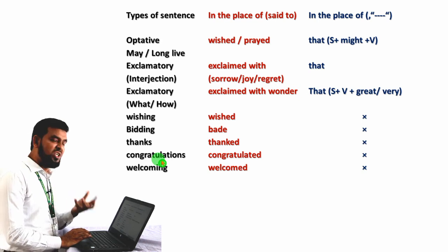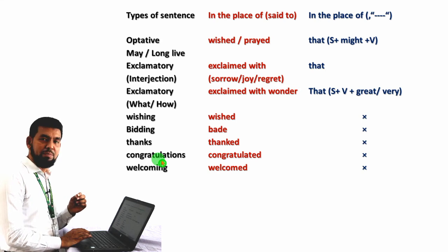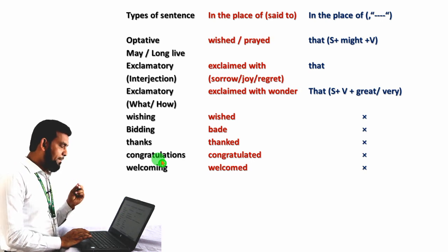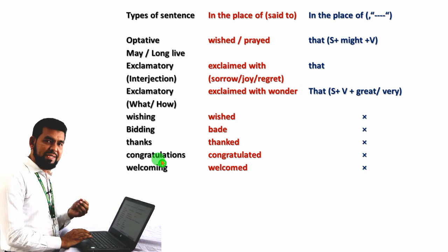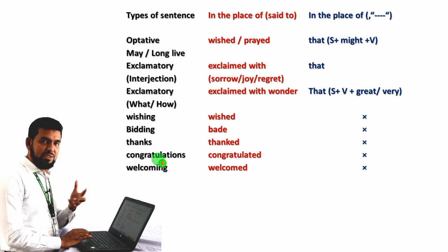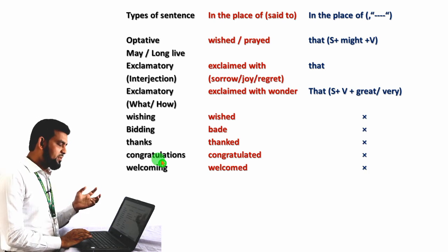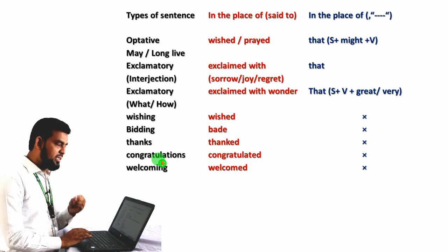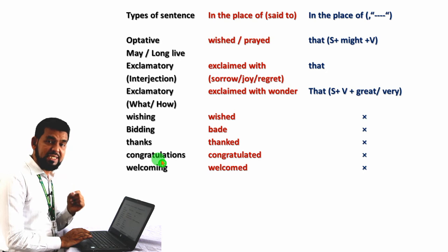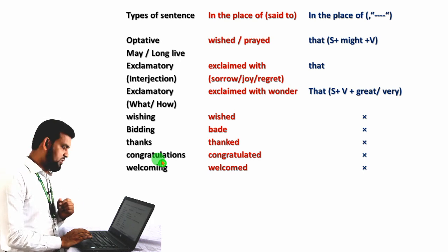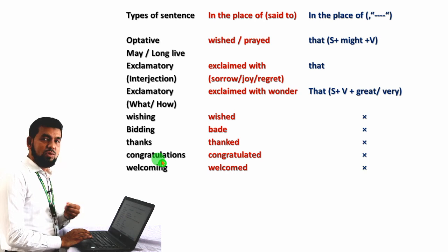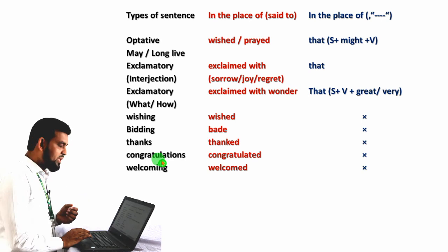If the sentence denotes wishing, we have to use 'wished' in place of 'said to', but in place of the inverted comma, we should not use any linkers. If the sentence denotes bidding, we use 'bade' in place of 'said to', and again no linker is used. If the sentence starts with or denotes thanks, we use 'thanked' in place of 'said to' — no linker is used. For congratulations, we use 'congratulated' in place of 'said to' — no linkers. Similarly, if it denotes welcoming, we use 'welcomed' in place of 'said to' — no linker should be used.